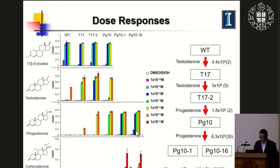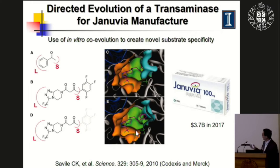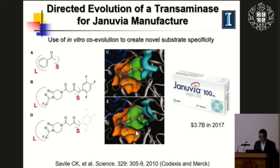After two more rounds of evolution, we eventually found two mutants that showed response towards corticosterone — enabling us to create a new ligand specificity. This approach was used by scientists from Merck and Codexis. They used the same strategy to engineer a transaminase with new substrate specificity to target a new substrate, creating a new process for synthesis of the Januvia drug used for treatment of diabetes. They commercialized this technology.